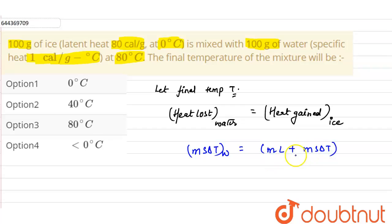Why mL + ms∆T? Because when the ice gains heat from the water, it will start melting, so the amount of heat it requires to melt is mL, plus to raise the temperature from 0°C to T°C will be ms∆T. This is for ice.